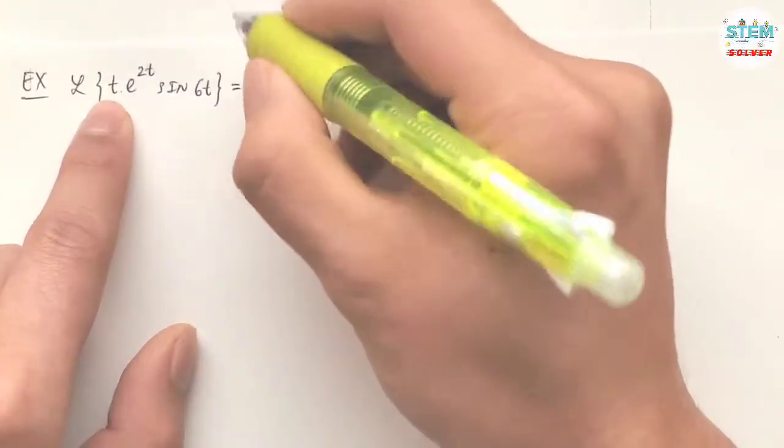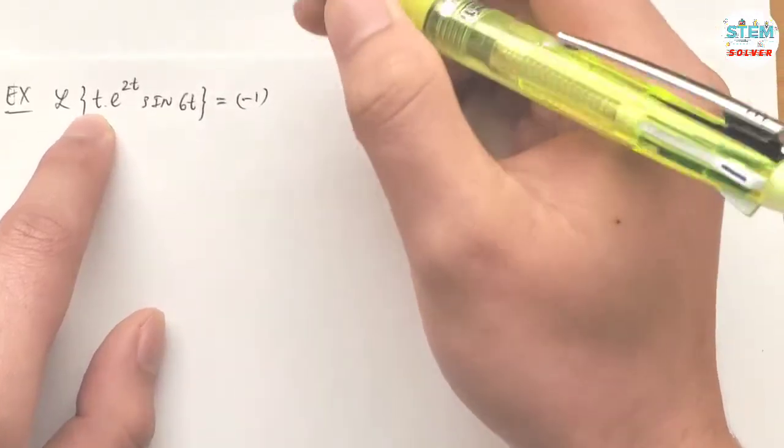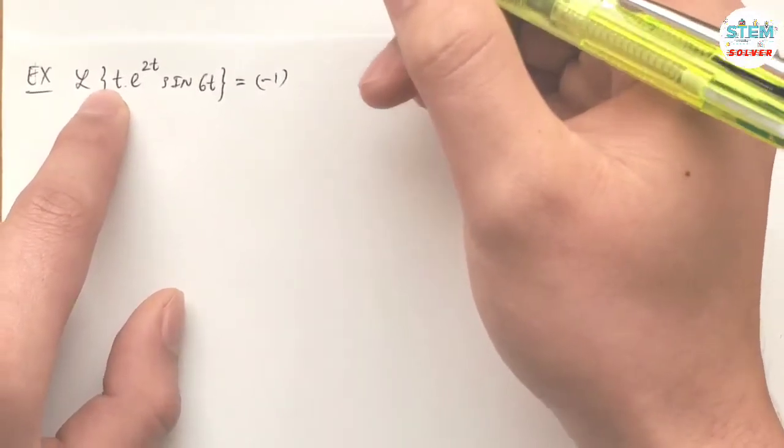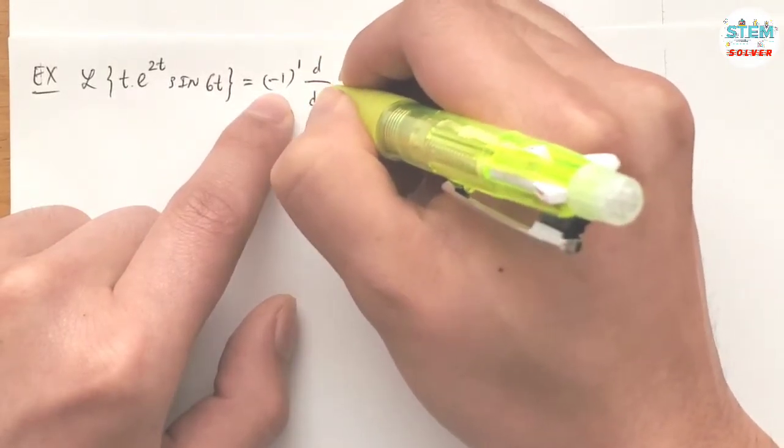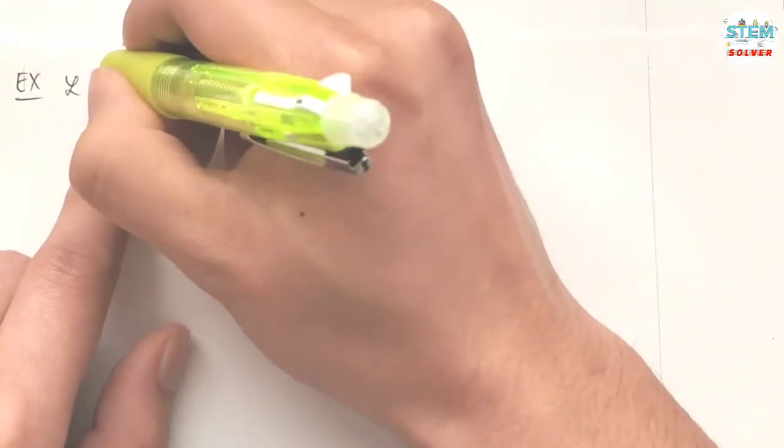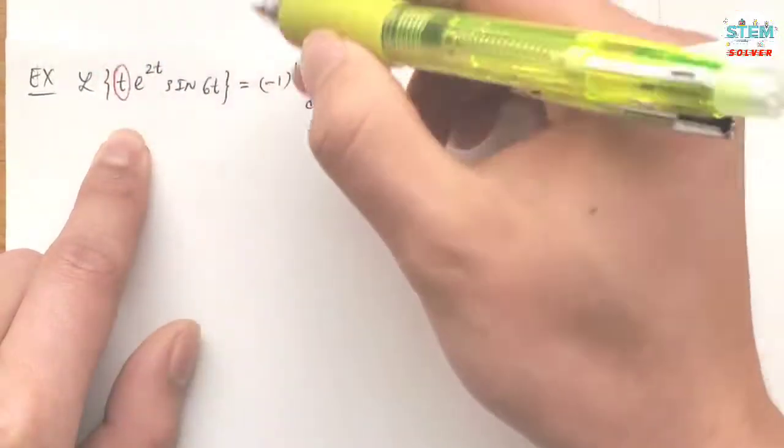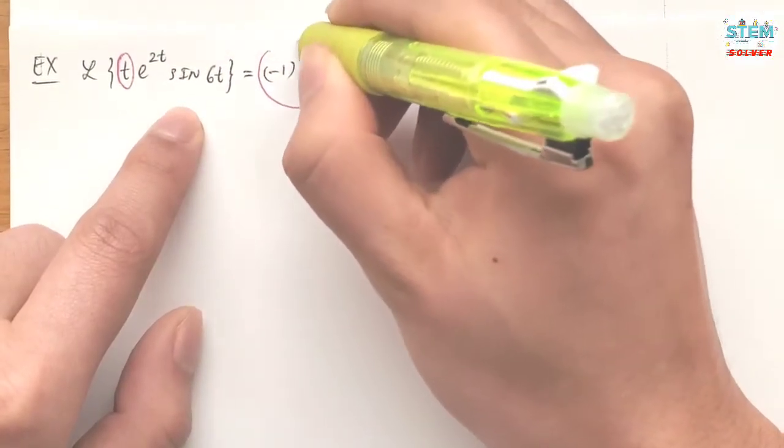So t, in the theorem for t, we have negative 1 to the power of n, and in this case we have t to the first, so we have negative 1 to the first times first derivative of this. Let me color it so that you know what part we are doing.